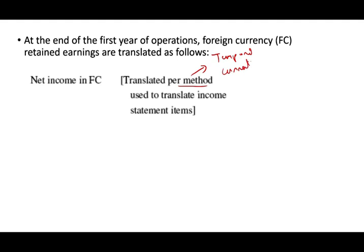Whatever method we are using, we're going to translate this into net income in the parent company using that method. It doesn't matter what the method is — both methods are used. The same method is used when we translate retained earnings.